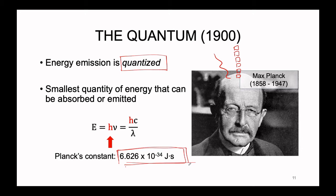Planck's constant is 6.626 times 10 to the negative 34 joule seconds. Because the frequency of light — represented by the Greek letter nu — is proportional to the speed of light and inversely proportional to wavelength, we can rearrange this equation to solve for frequency and insert that into the equation as well. So whether we are paying attention to light as a function of frequency or as a function of wavelength, both equations can be set equal to energy if we multiply by Planck's constant.